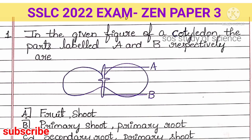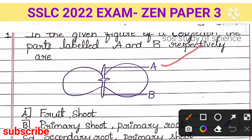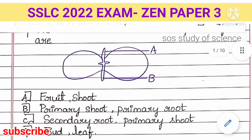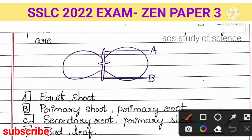The first question: in the given figure of a cotyledon, the parts labeled A and B respectively are — if you observe this picture, it is given in the 'How do organisms reproduce' lesson. In the textbook it is given as future shoot called plumule and future root called radicle, but those options are not given here. Looking at the four options: option A is 'fruit and shoot' — it is definitely not a fruit, so option A is wrong.